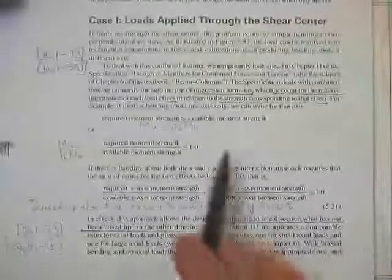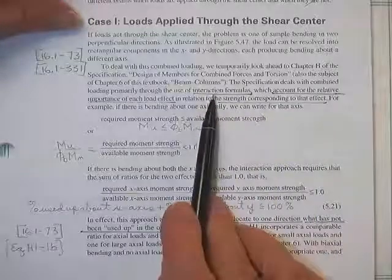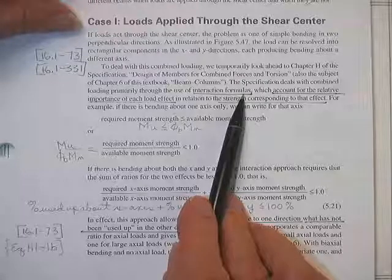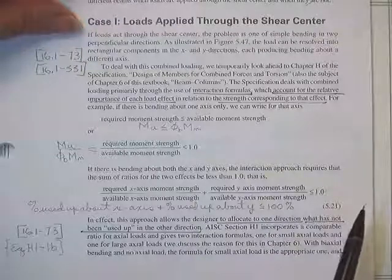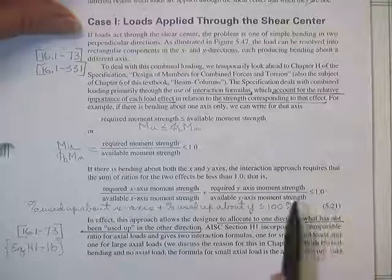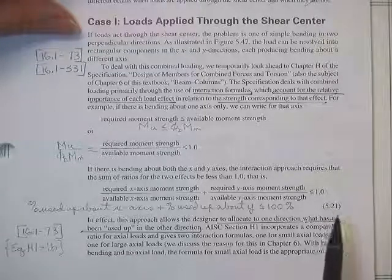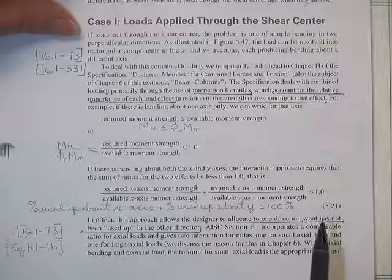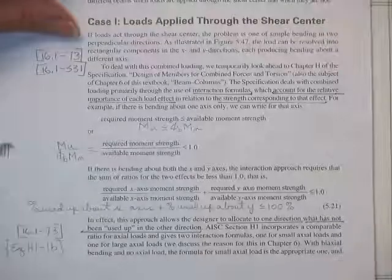Getting back to the book — here's how we handle bending about two axes. We use an interaction formula. It asks: do you have some bending strength about the X-X axis? Yes — from M-plastic, from lateral torsional buckling, from web local buckling, flange local buckling. You have a strength value that it's good for if you put that much load on it.